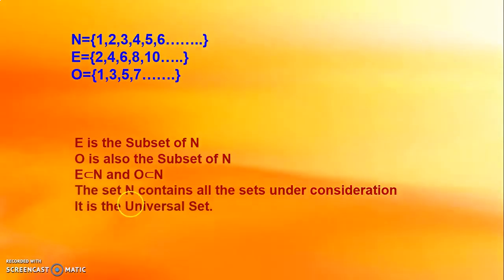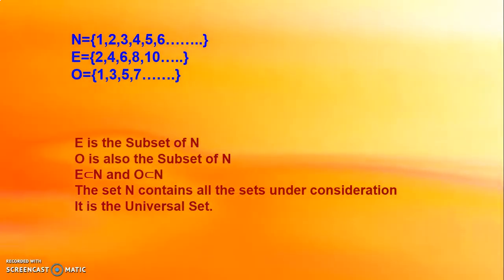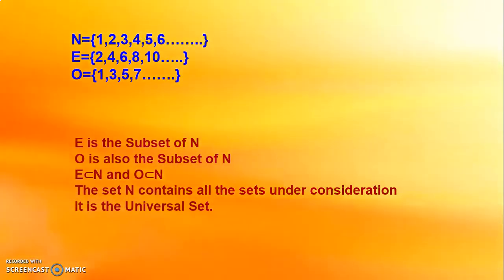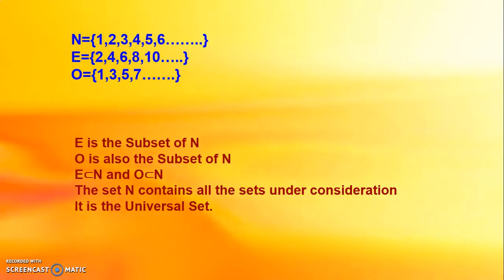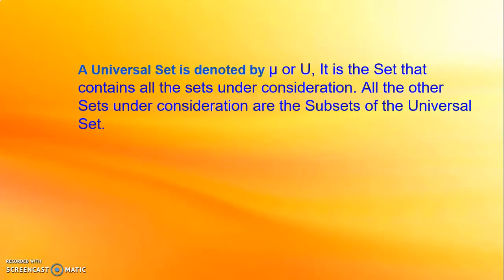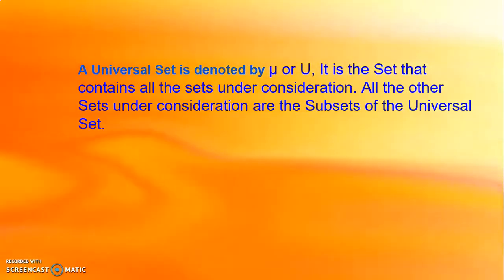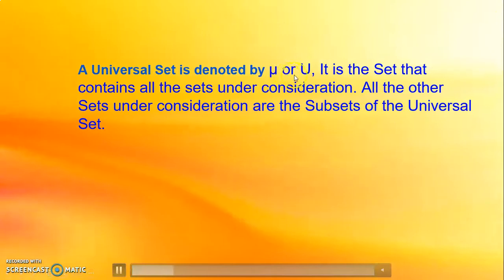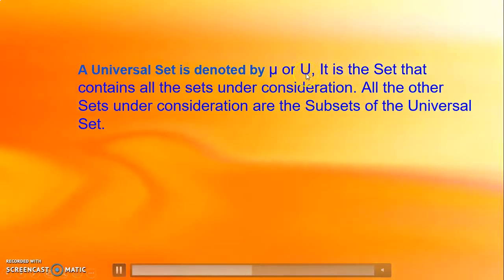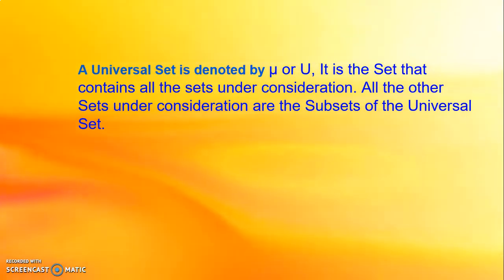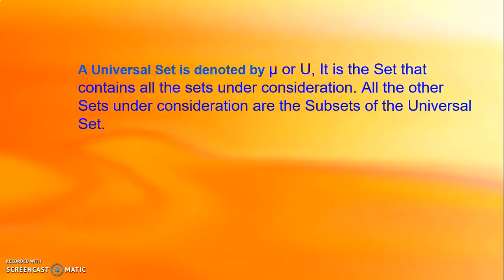The set N contains all the sets under consideration, so we call that set the universal set. A set which contains all the sets under consideration is called a universal set. In this case, the set of natural numbers is the universal set. The universal set is denoted by the symbol μ, or you can also write it using capital U. All the other sets being considered are subsets of the universal set.